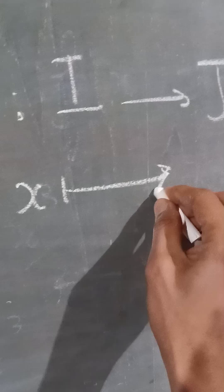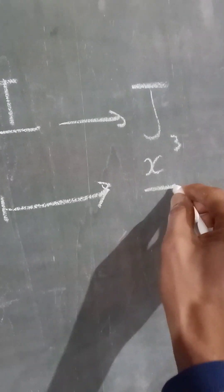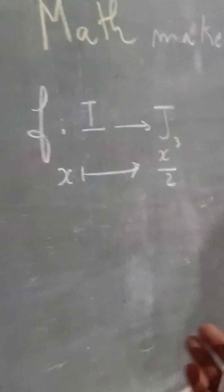So this function is like this exactly. X to the power of 3 divided by 2. So this is our function.